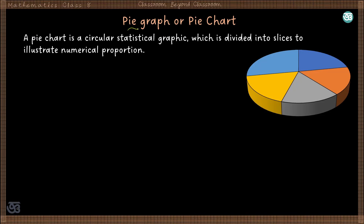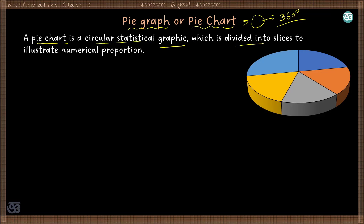Now coming to the pie graph or pie chart. This is related to a circle, and one circle has a total angle of 360 degrees — one complete revolution. A pie chart is a circular statistical graphic which is divided into slices to illustrate numerical proportions. Each slice has a particular angle, and that angle depends on the frequency of the data.